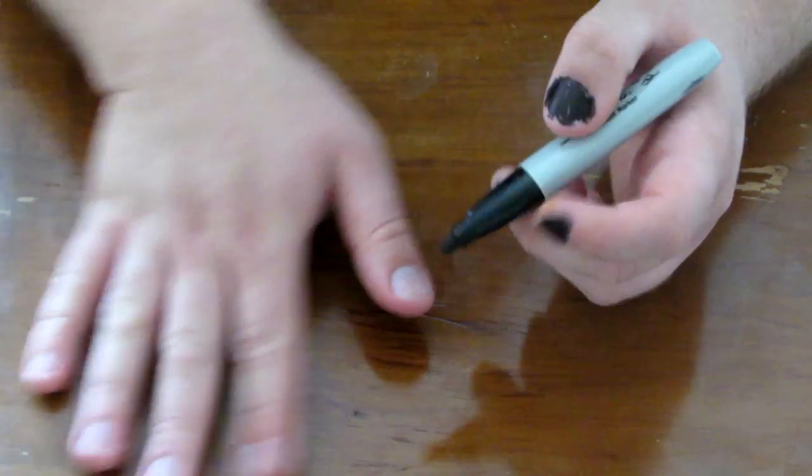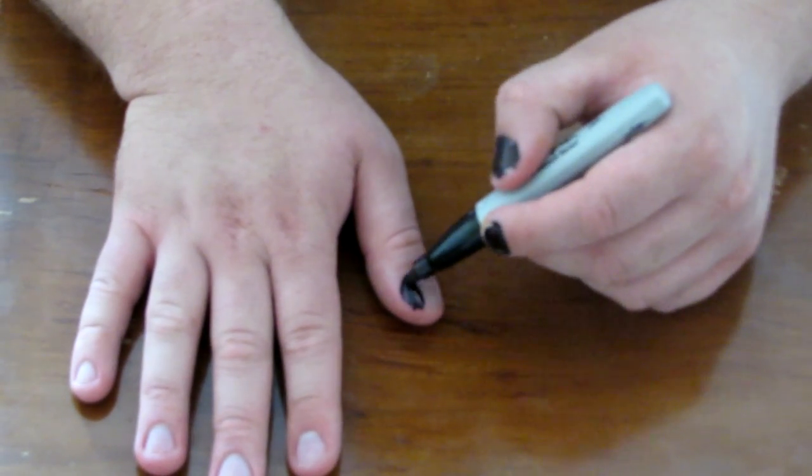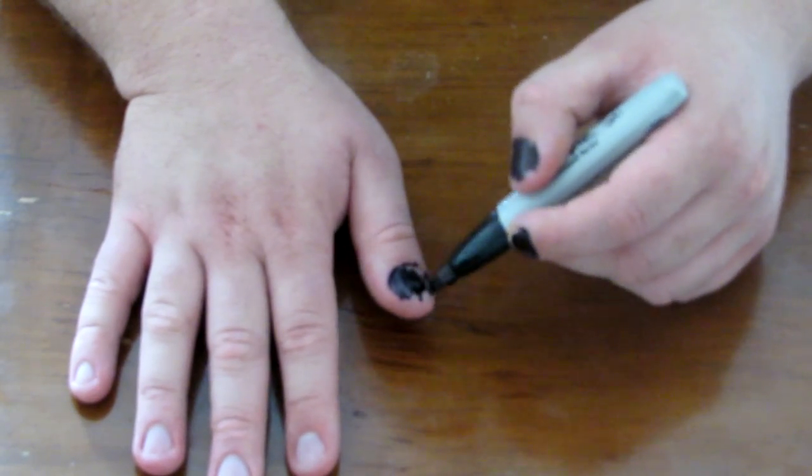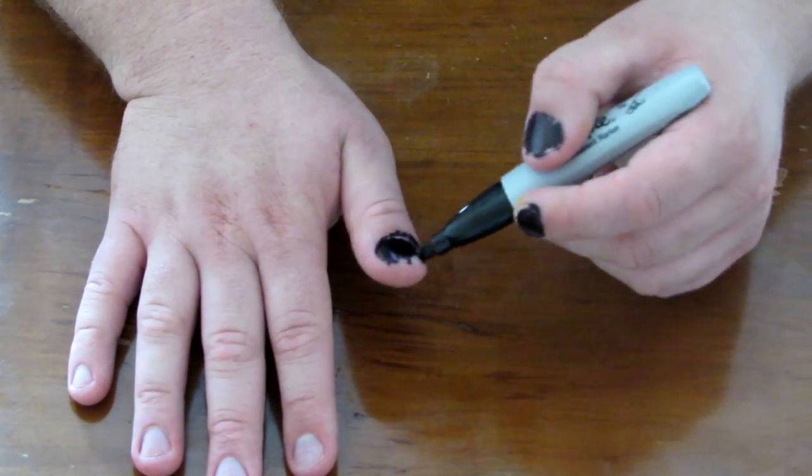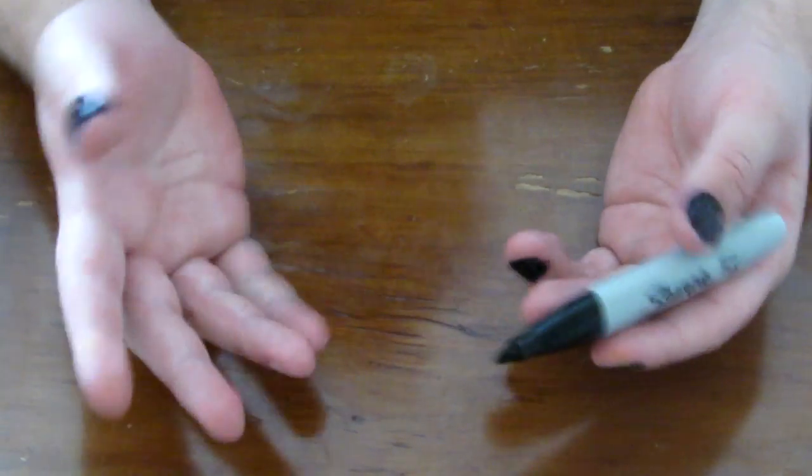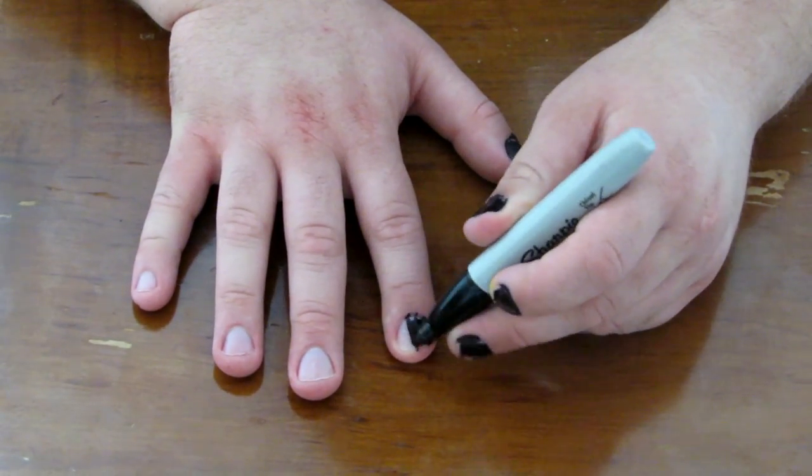Now we're gonna start with the other hand and this is gonna be a bit harder since you're using your less dominant hand, unless you're ambidextrous in which case you might be an alien. So let's get these nails done here.